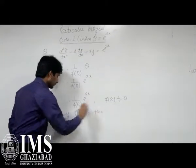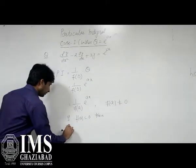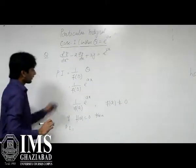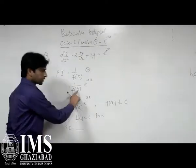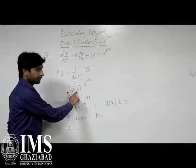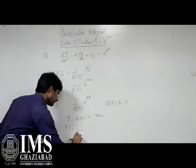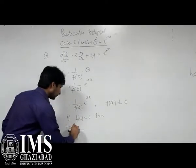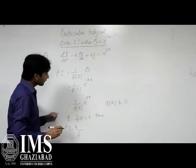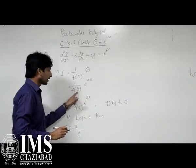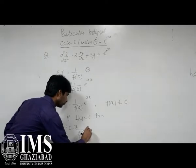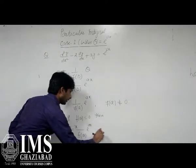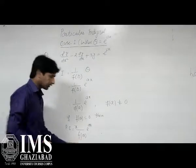Then in this case, simply particular integral is equal to, simply which we will differentiate with corresponding given variables. So this is a function of D. So first we differentiate with respect to D and multiply by x. Again we replace D by a. So this is simply 1 upon F'(a) into e to the power ax.